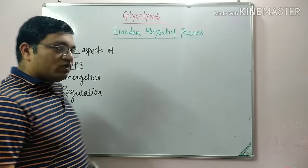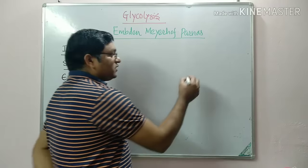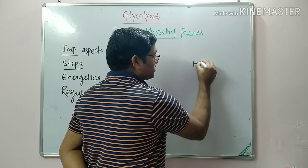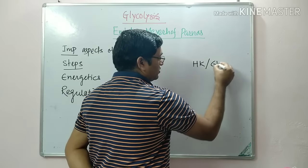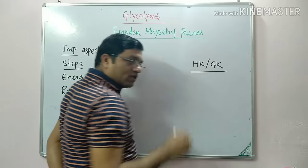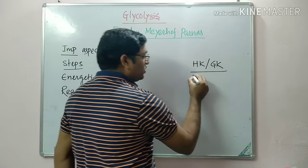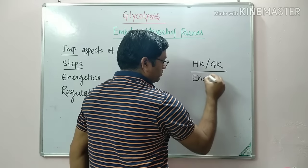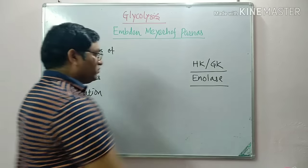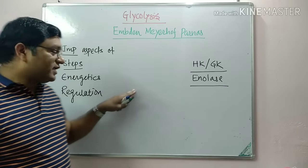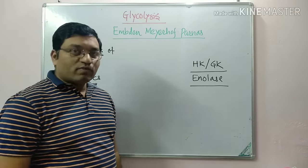We will also discuss a very common viva question — the difference between Hexokinase and Glucokinase — and the action of Fluoride Ion on Enolase. So we will discuss this topic under these headings, beginning with the important aspects of Glycolysis.